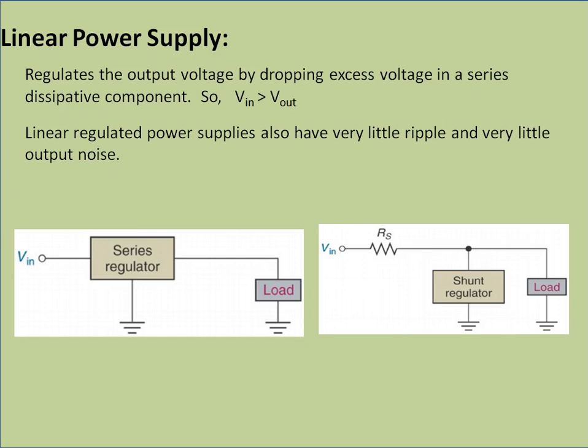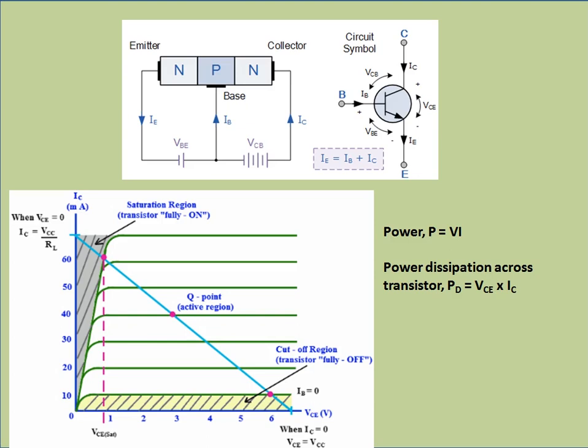The different types of linear power supply regulators are the series regulator and the shunt regulator. Depending upon the position of the control element — whether it is in series or in parallel — series and shunt regulators are classified.